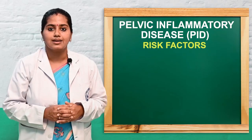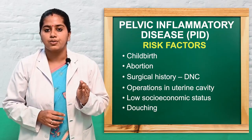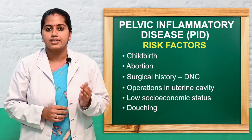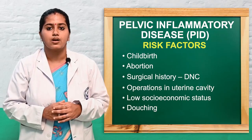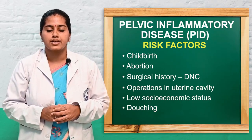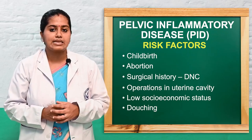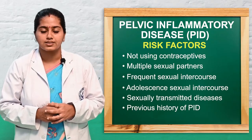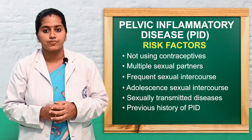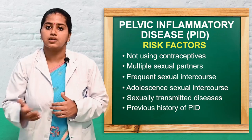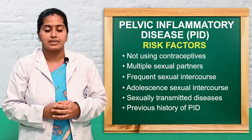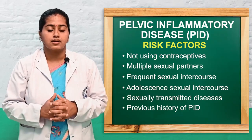Risk factors include: post-childbirth or post-abortion history, any surgical histories like D&C procedure or surgical operations in the uterine cavities, low socioeconomic group, douching procedure (cleaning of the vagina), not using contraceptives, multiple sexual partners, frequent sexual intercourse, young age or adolescent age engaging in sexual intercourse, partners with sexually transmitted diseases, previous history of pelvic inflammatory diseases, and present history of sexually transmitted diseases.